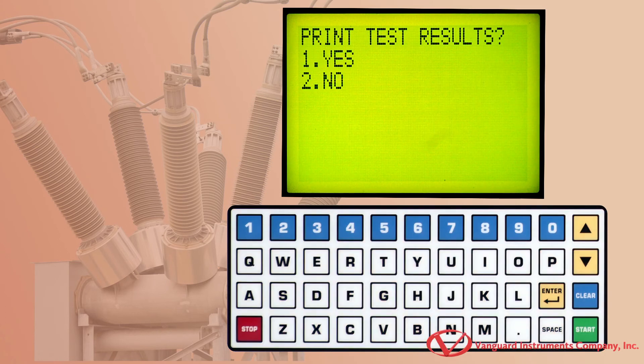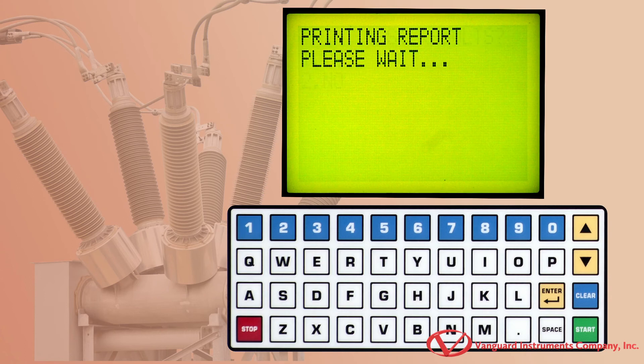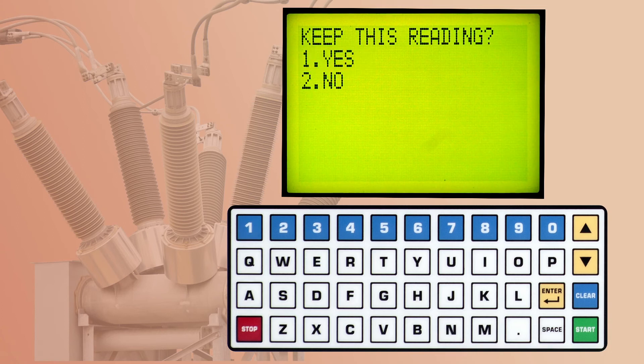Press any key to continue. Press the 1 key to print the test results. The test report will be printed on the unit's built-in thermal printer. Press the 1 key to keep the reading.